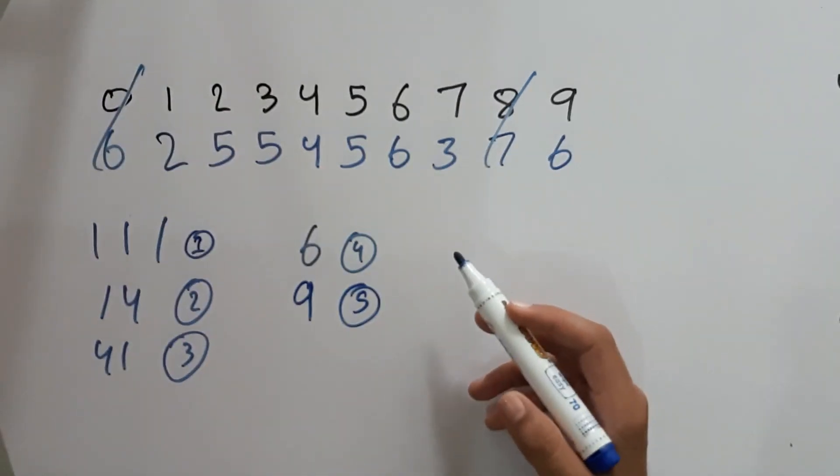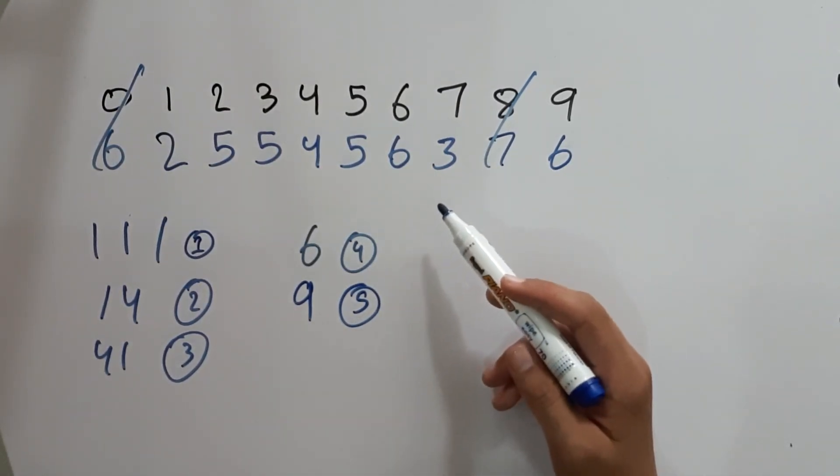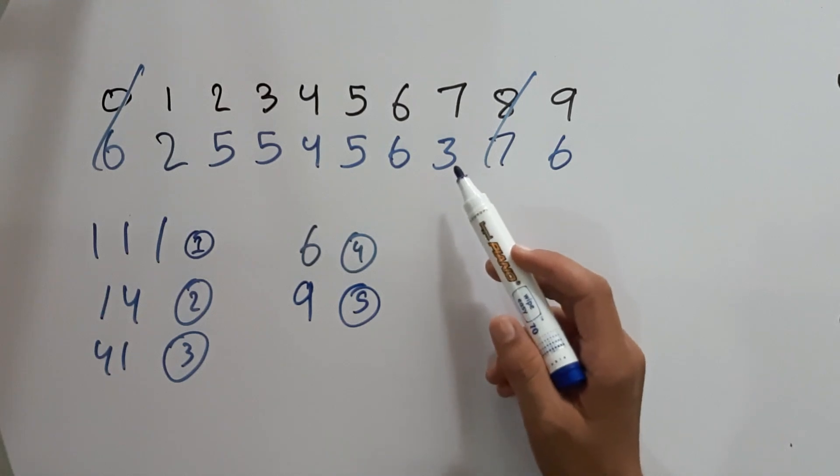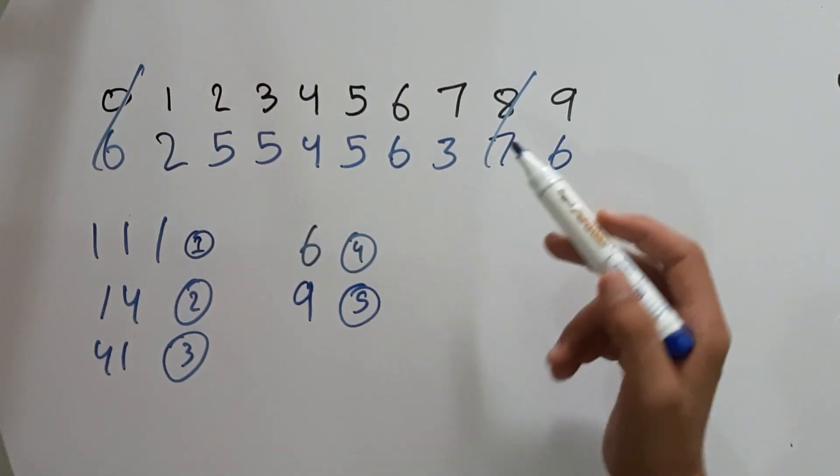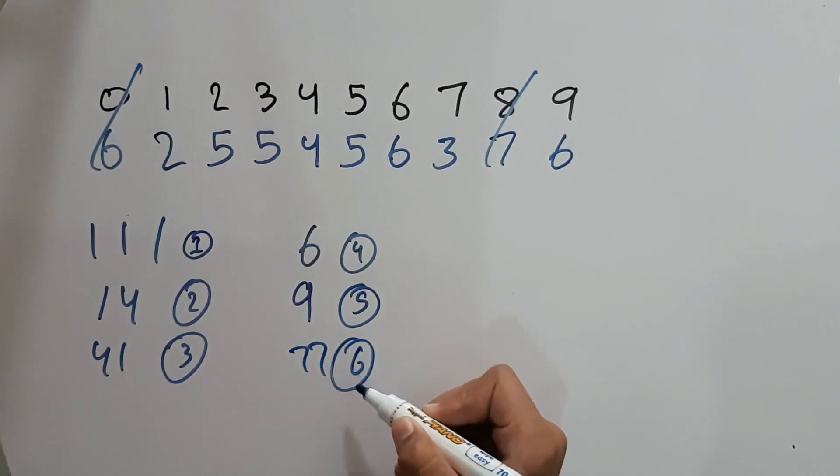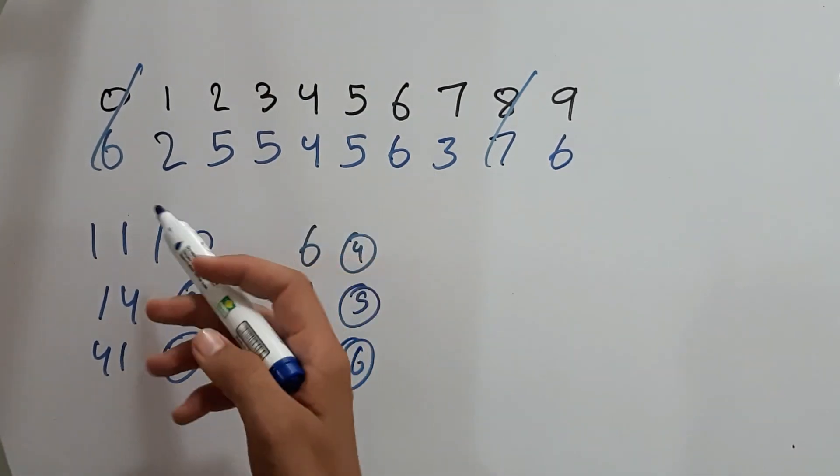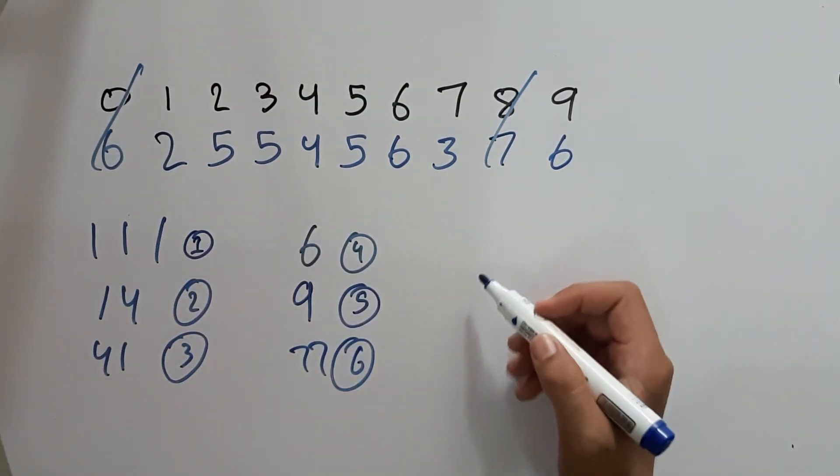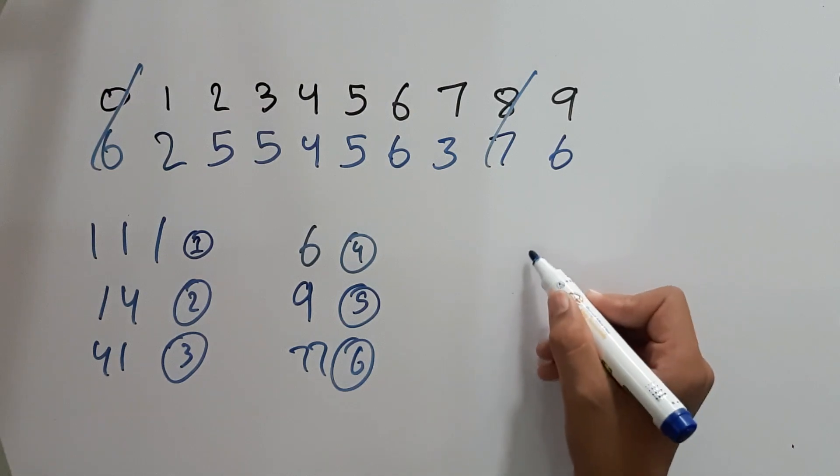For our number 6, we can use 7 because it contains 3 matchsticks. So 3 plus 3 equals 6, meaning we'll make 77. And if we see, we cannot make any more numbers. So the numbers we can only make is 6.